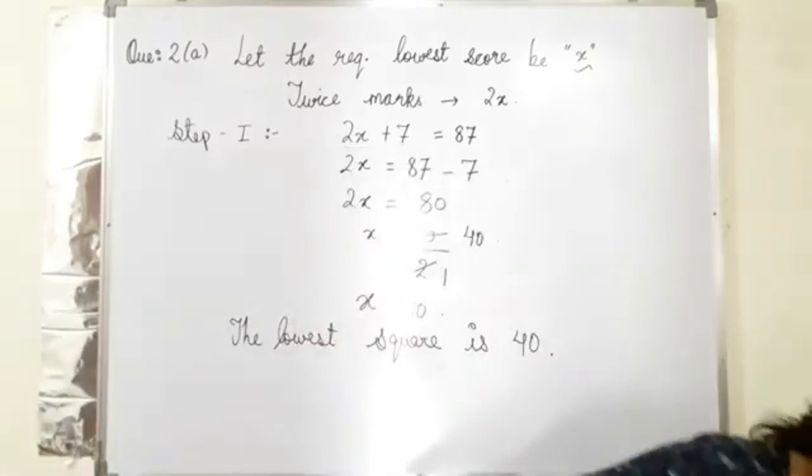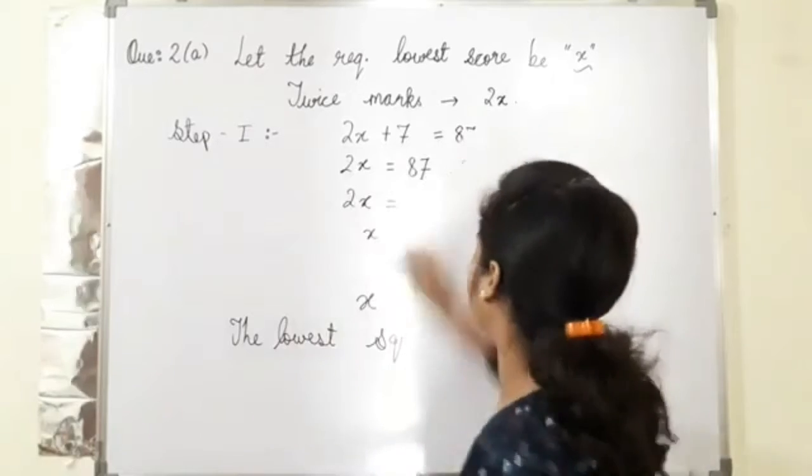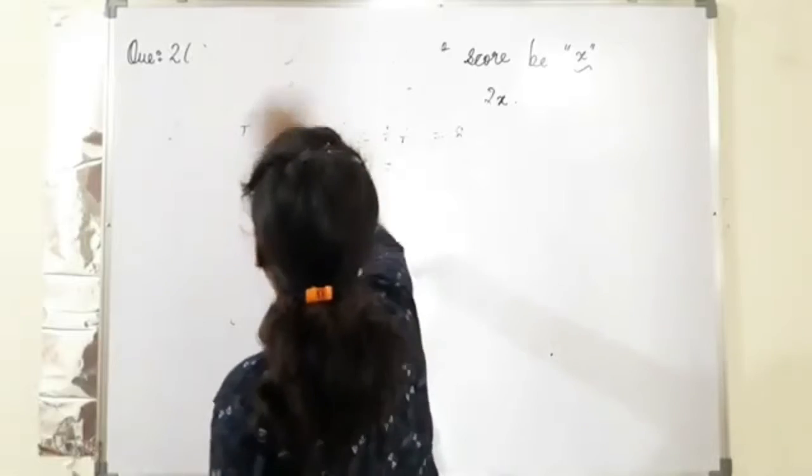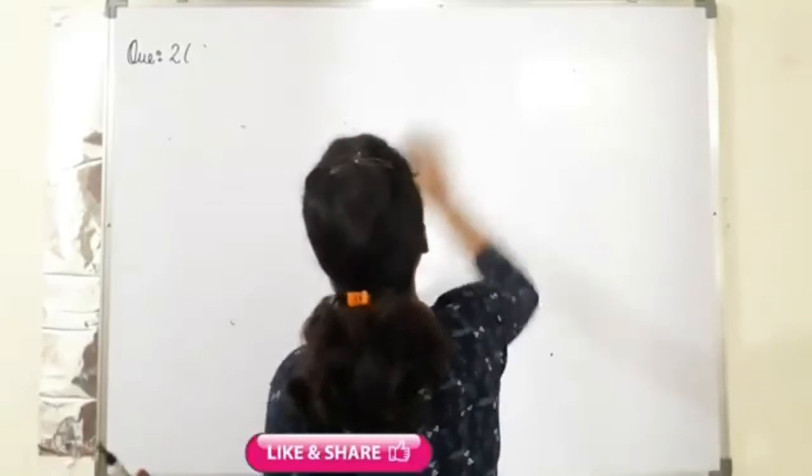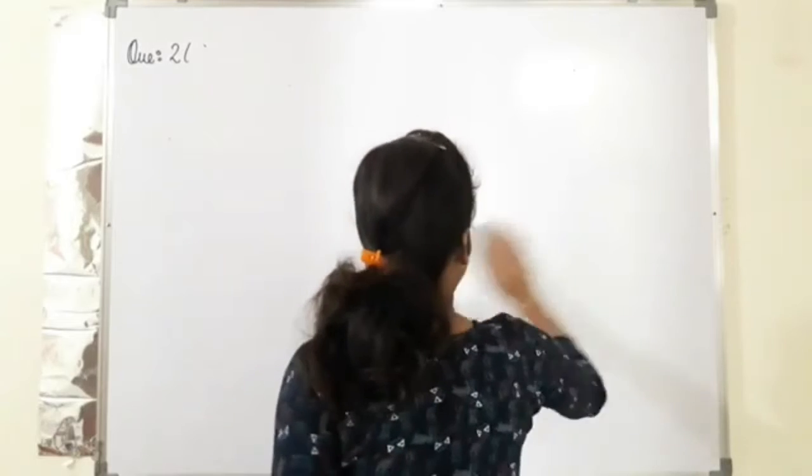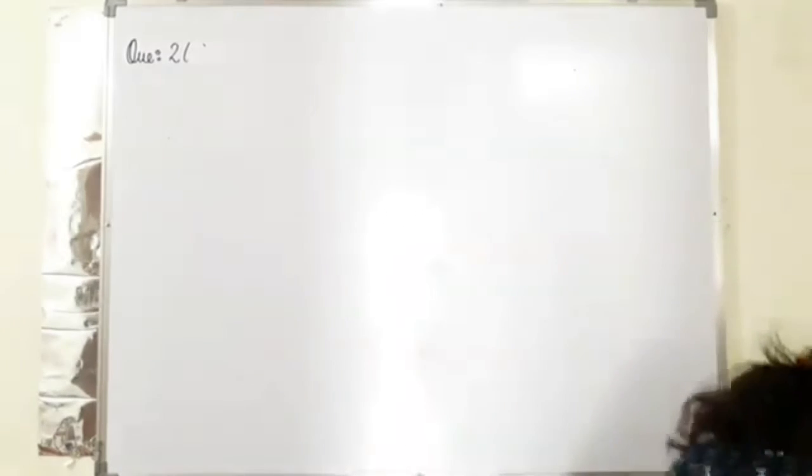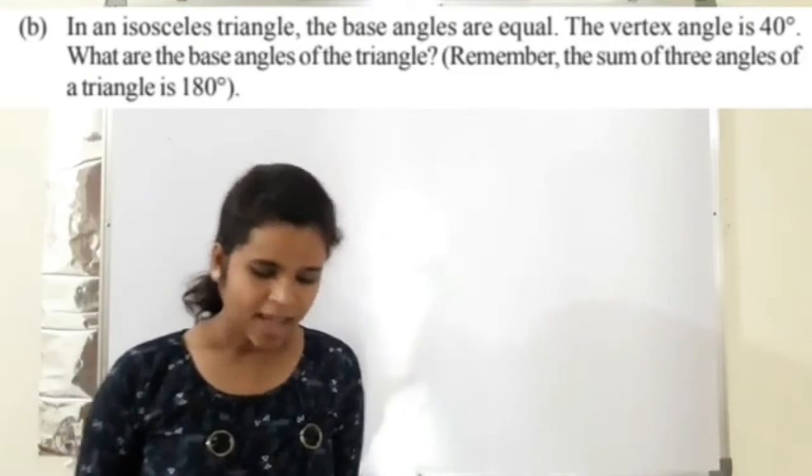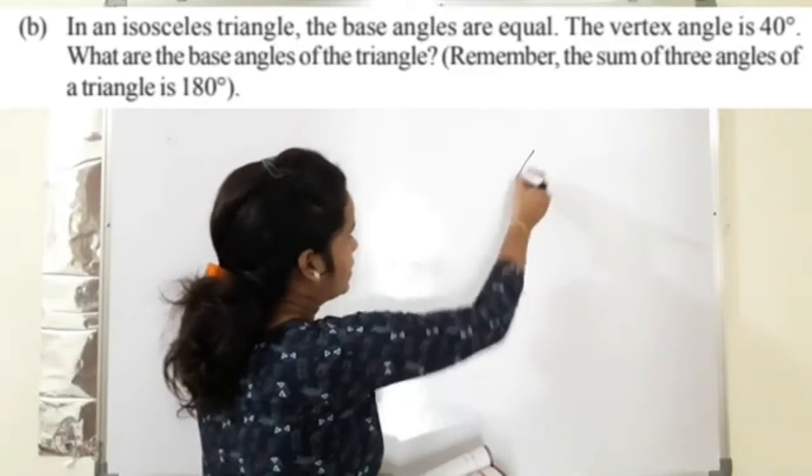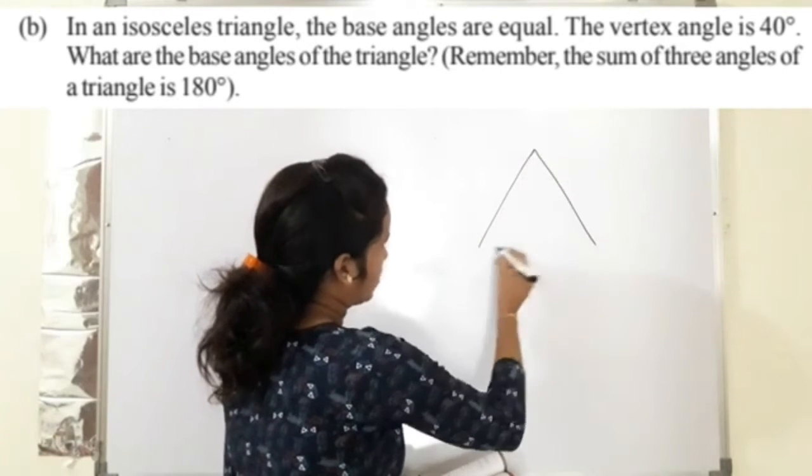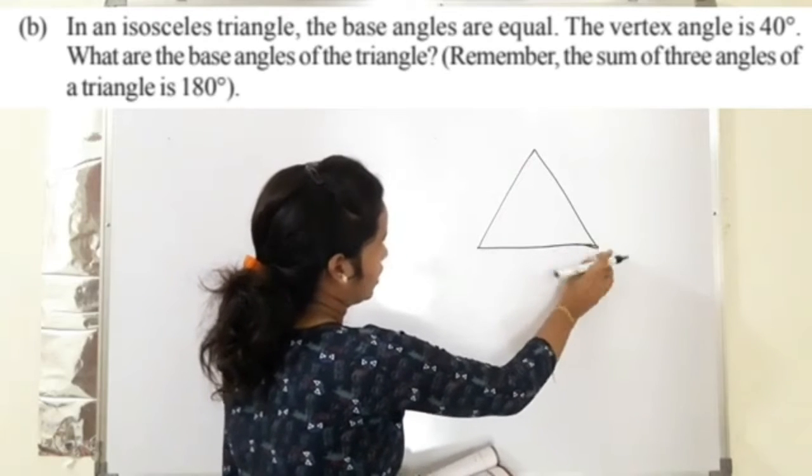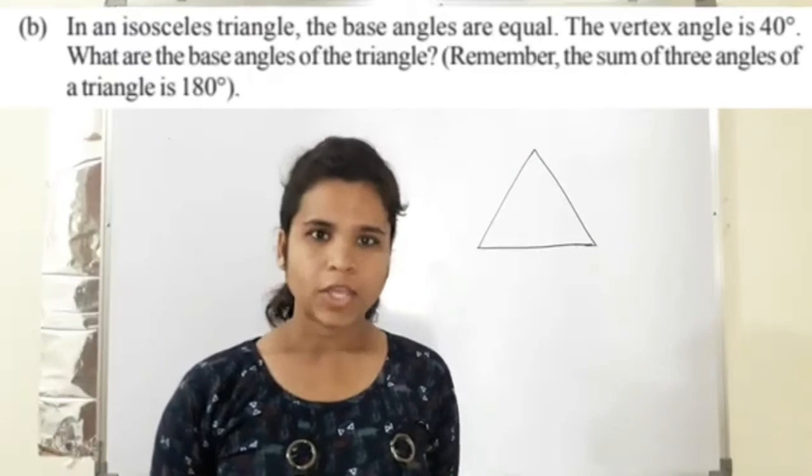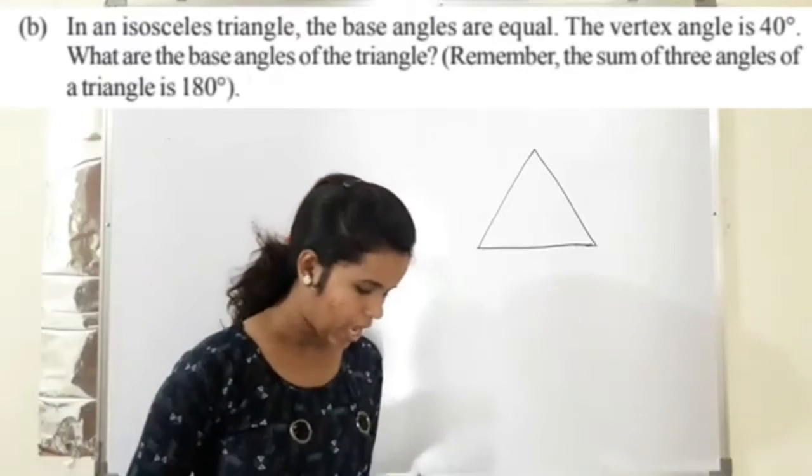Now come on to part B. What is part B? In an isosceles triangle, isosceles triangle means a triangle where two sides are equal, not all three sides. When all three sides are equal, that's equilateral triangle. What condition is given? Isosceles triangle.